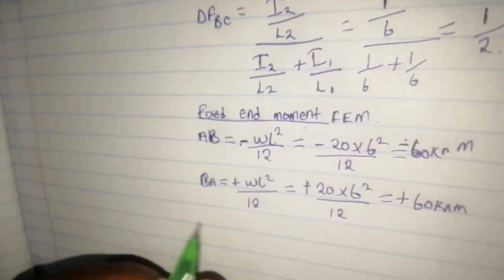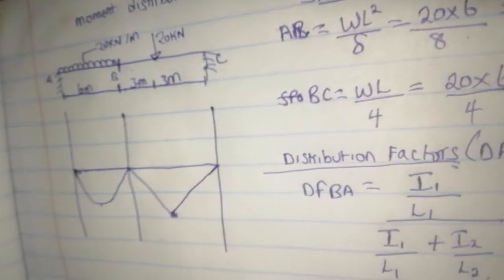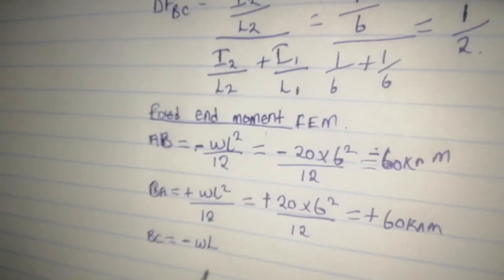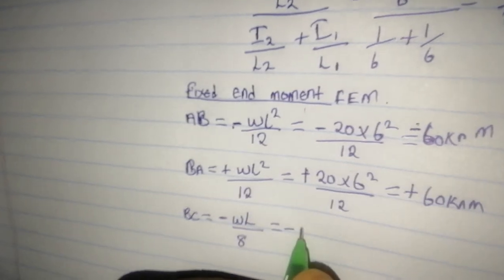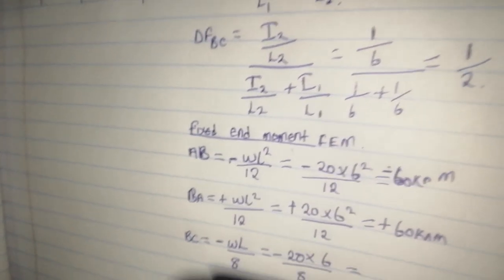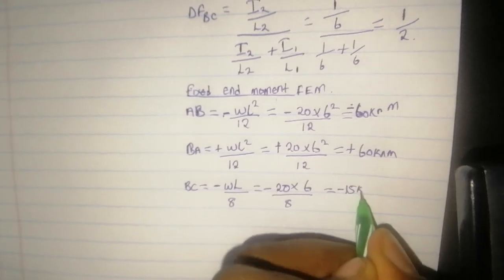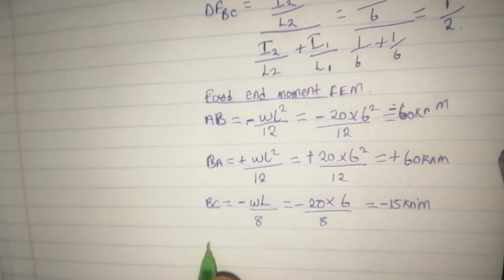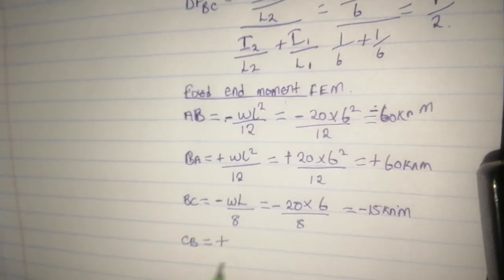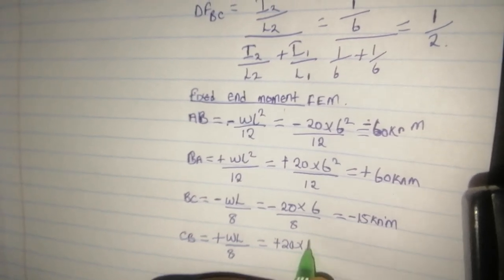We go to FEM_BC. When going towards C it is negative. The formula for a point load is WL/8. So it is negative 20 times 6 divided by 8, which gives negative 15 kN·m. Then FEM_CB is positive — it is only the sign that changes. So it is positive 15 kN·m.